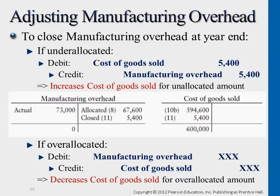This entry here is a case for over-allocation. If we allocated too much in each of these job orders, we take some of the costs back. So we reduce the cost of goods sold expense account — it's the flip of the under-allocation situation.